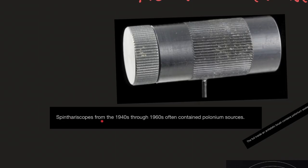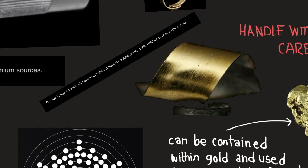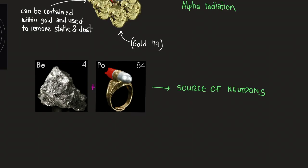Here you have spinthariscopes from the 1940s through 1960s, often contained polonium sources. The foil inside an antistatic brush contains polonium sealed under a thin gold layer over a silver base. Polonium is also used as a source of neutrons.